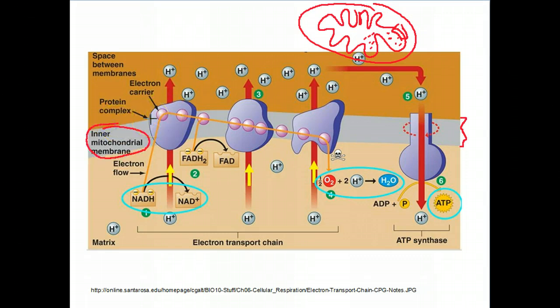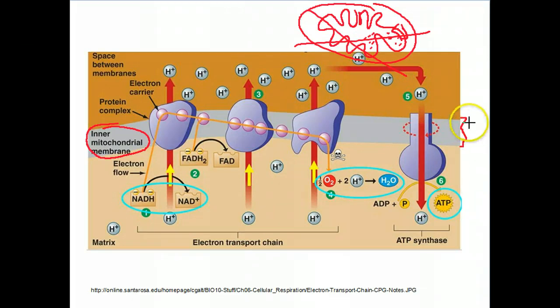This is only true if the cells are eukaryotic. If the cells are prokaryotes, such as bacteria and archaea, they do not have mitochondria. So this membrane is going to be the plasma membrane.